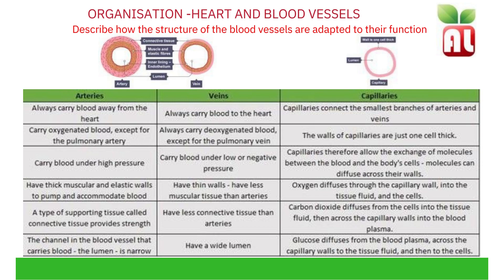Capillaries connect the smallest branches of arteries and veins. The walls of capillaries are just one cell thick, allowing the exchange of molecules between the blood and the body's cells. Molecules are able to diffuse across their walls. Oxygen diffuses through the capillary wall into tissue fluid and cells. Carbon dioxide diffuses from the cells into the tissue fluid, then across the capillary walls into the blood plasma. Glucose diffuses from the blood plasma across capillary walls to tissue fluid and then into cells.